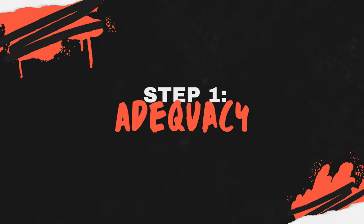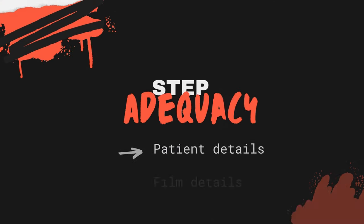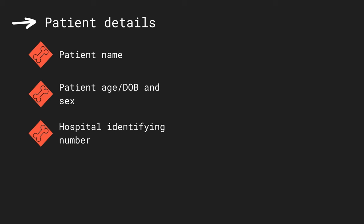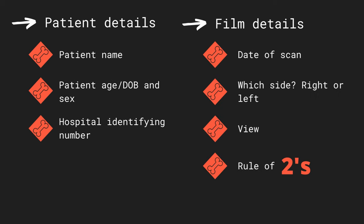Step 1 of our ABCS approach is adequacy. Here, the film and patient details should be assessed before looking at the radiological image. Patient details are largely recorded for practical reasons, to ensure that the viewed x-ray is in fact an image taken from the desired individual. It is important to report the patient's name, age or date of birth, sex, and possibly their hospital folder number for identification and provision of brief clinical context. The details of the film, such as the date on which it was captured, as well as the site of the body and view it depicts, are equally important to consider.